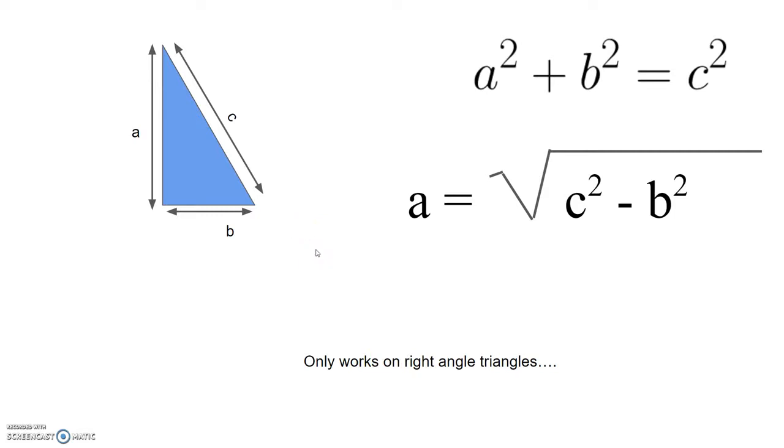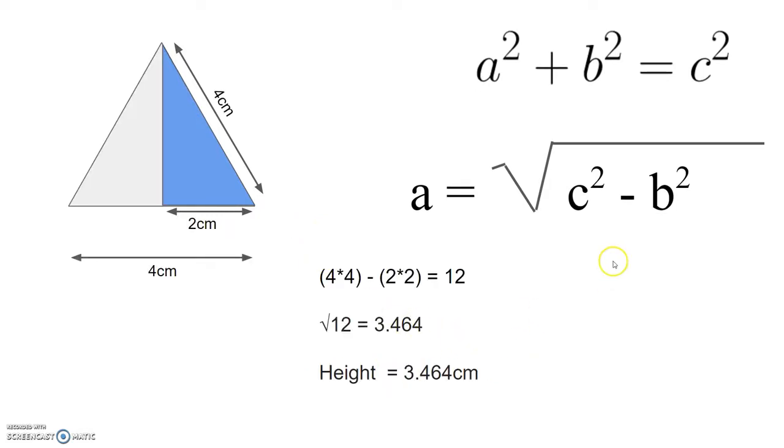Good. Okie dokie. So, let's get started. So, how does that work? Well, easiest way to do it is to work out c squared, work out b squared. So, c squared is this one here, 4. So, 4 times 4, c squared is 16. B squared here, well, B is 2. So, 2 times 2 is 4. So, you've got 16 minus 4, which is 12.